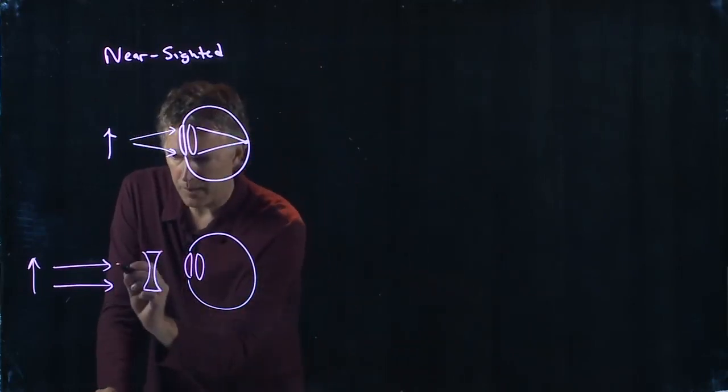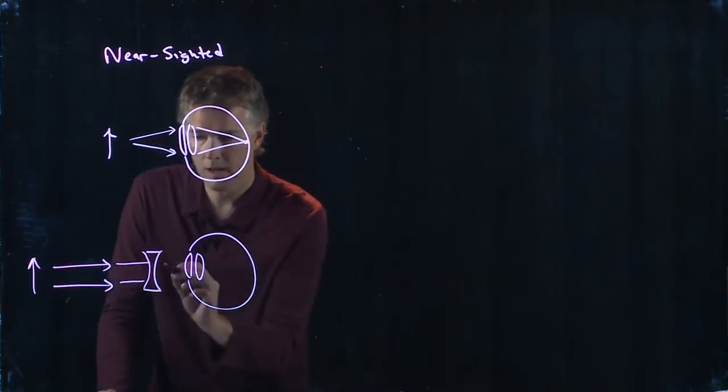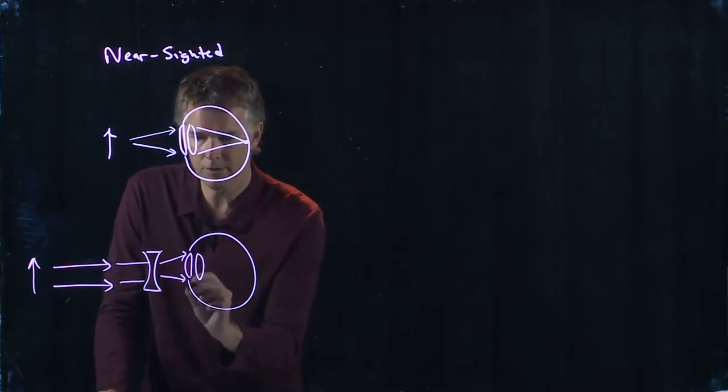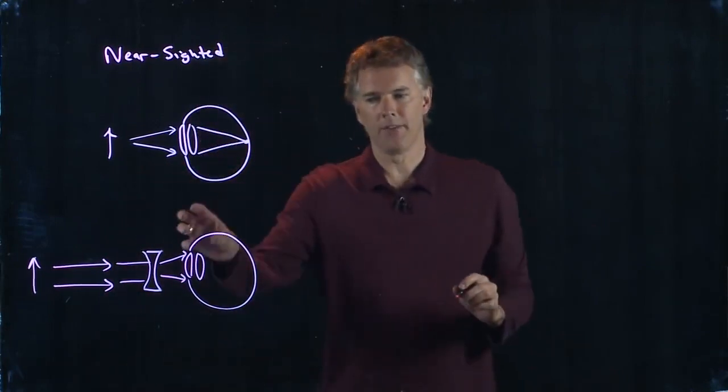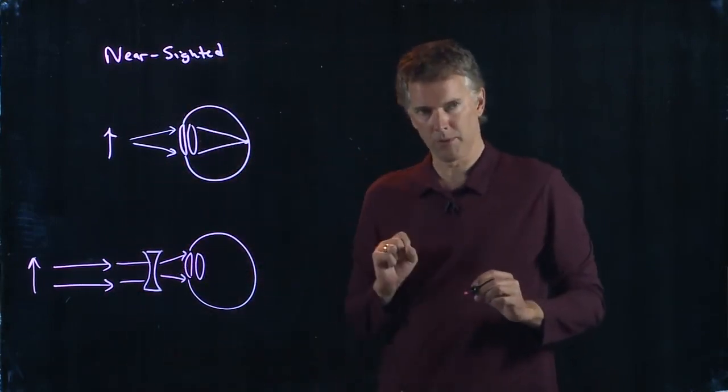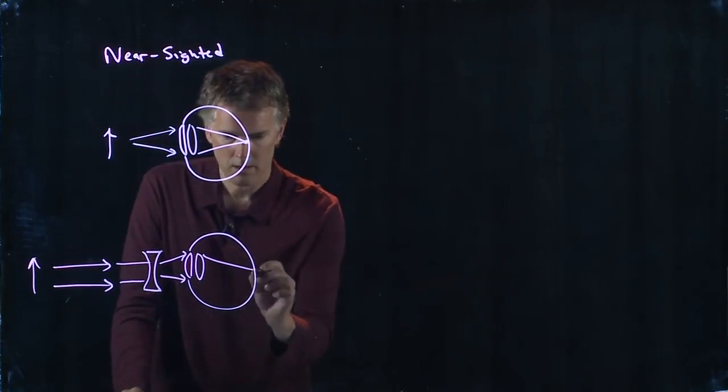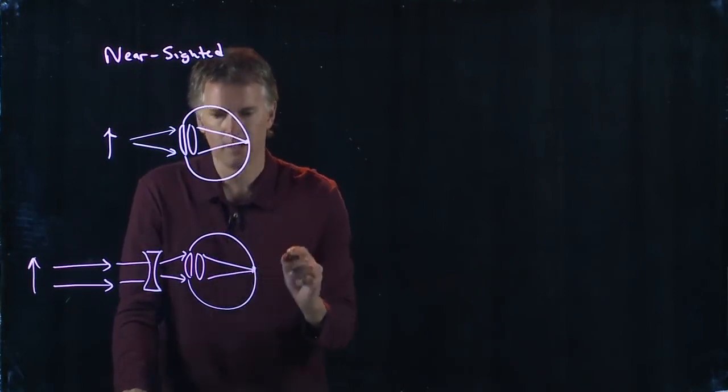And when those parallel rays come into this diverging lens, they're going to diverge. And if they diverge the same amount as we had up there, everything's going to come back together.